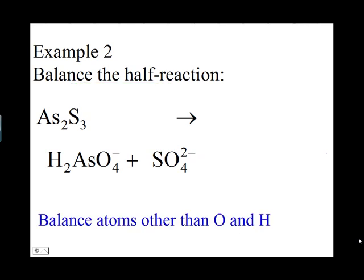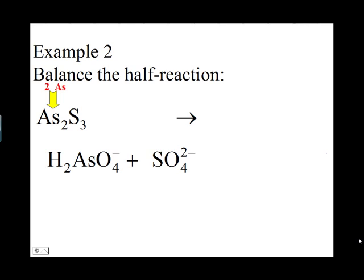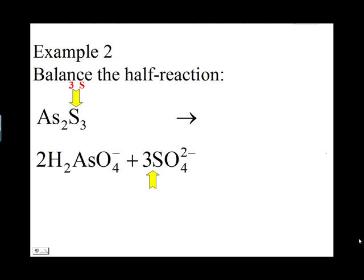Start by balancing atoms other than oxygen and hydrogen. There are two arsenic atoms on the left and one on the right, so a coefficient of two is written before H2AsO4⁻. On the left there are three sulfur atoms, and on the right SO4²⁻ has one sulfur atom, so a coefficient of three is written on the sulfate ion. Now there are three sulfur atoms on both sides.